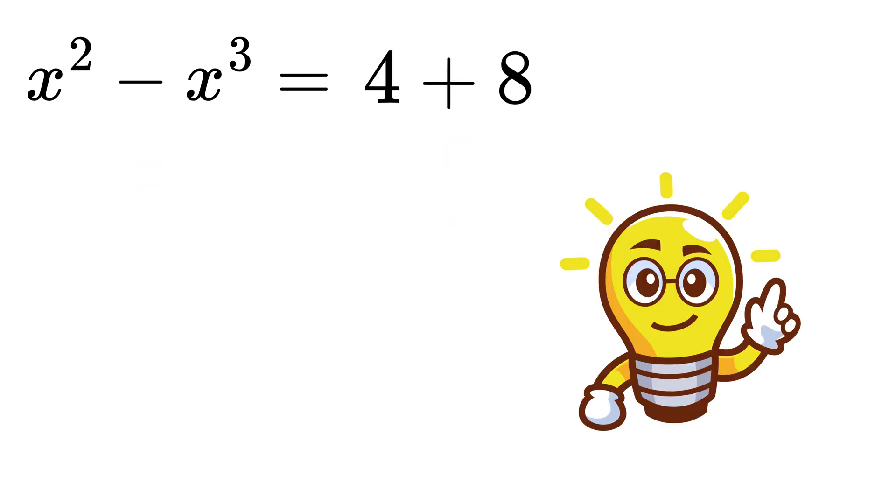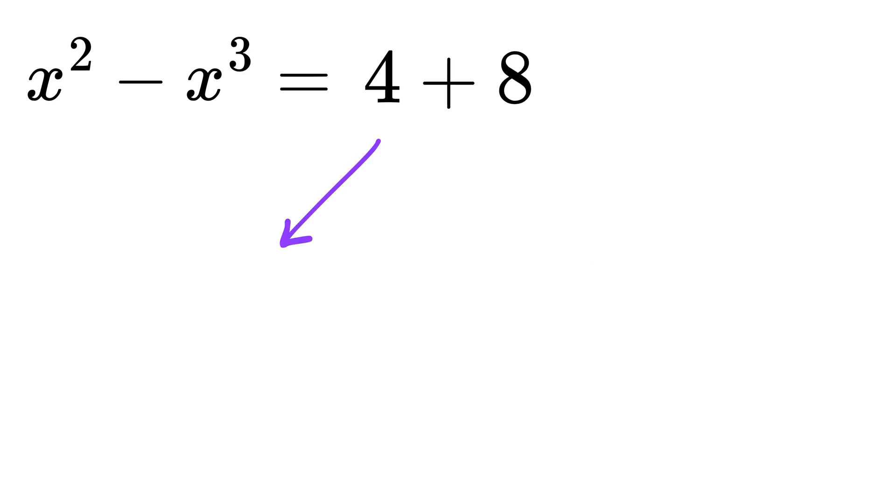So, if you think a little bit, we can rewrite this 4 as negative 2 times negative 2, where both these minus signs cancel out, and we get 4. So, negative 2 whole square equals 4.